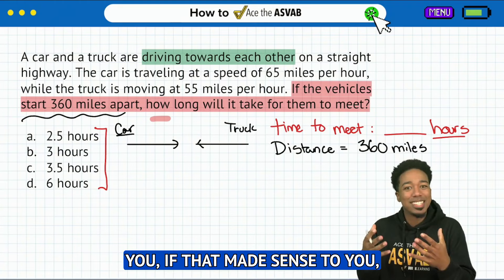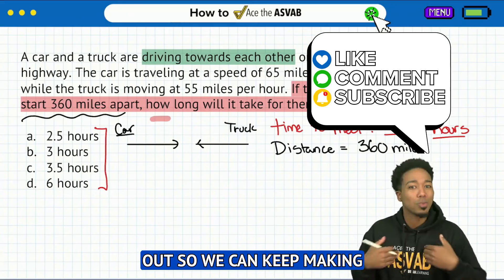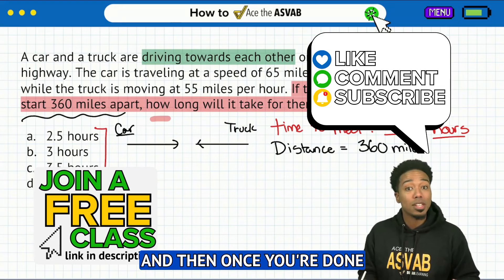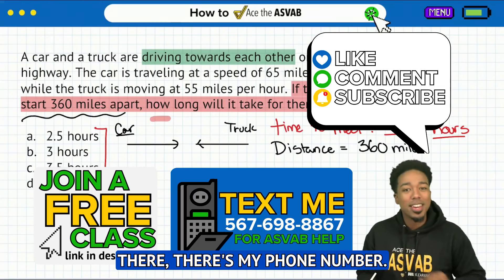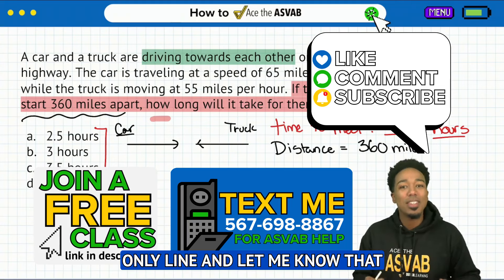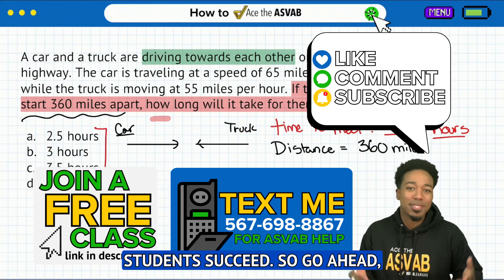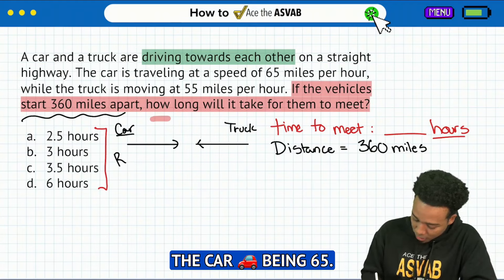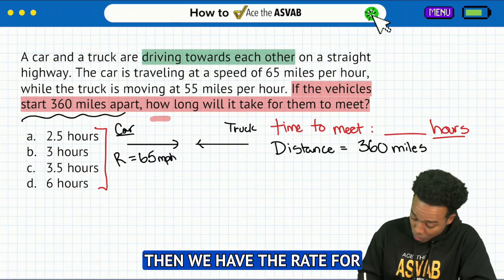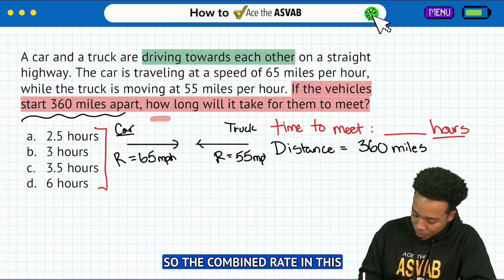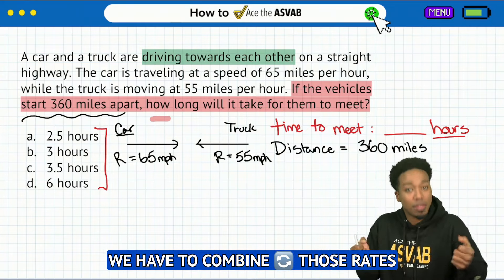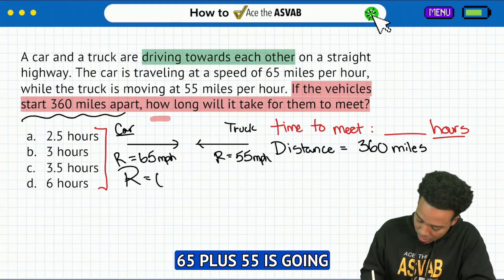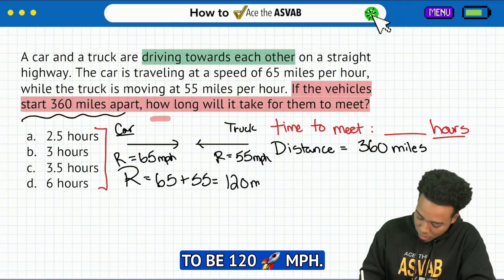If that made sense, leave a comment and let me know. But also, join tonight's free class. Sign up, show up, and raise your score. Now let's finish the solution. The rate for the car is 65 miles per hour, and the rate for the truck is 55 miles per hour. Since they are moving at the same time in opposite directions, we have to combine those rates — opposite directions means we add the rates. So 65 plus 55 is going to be 120 miles per hour as the combined rate.